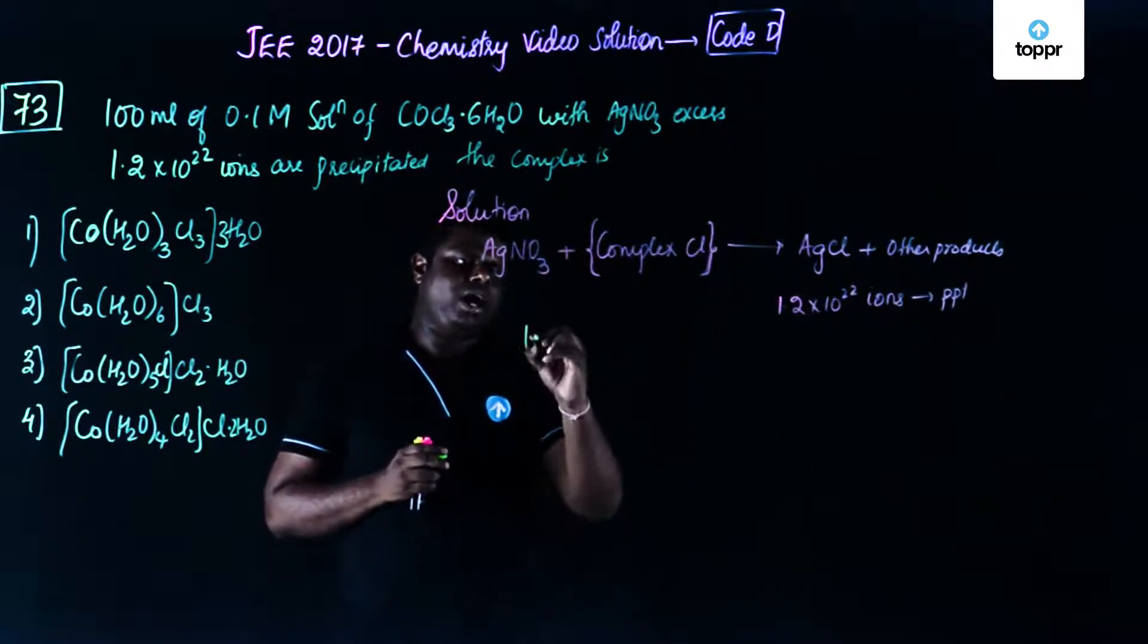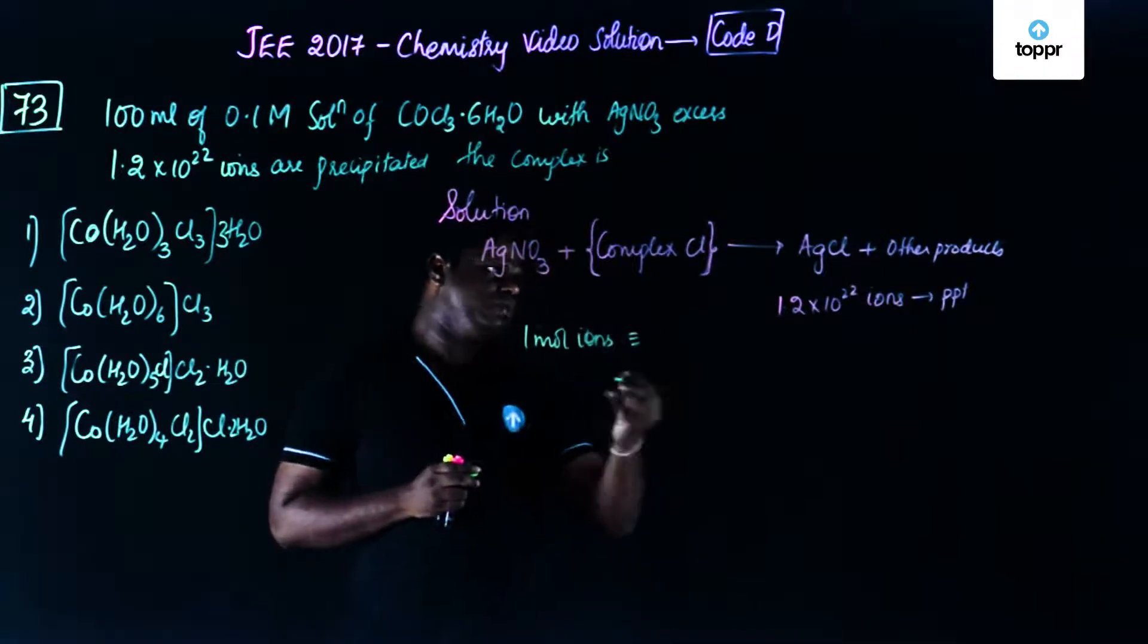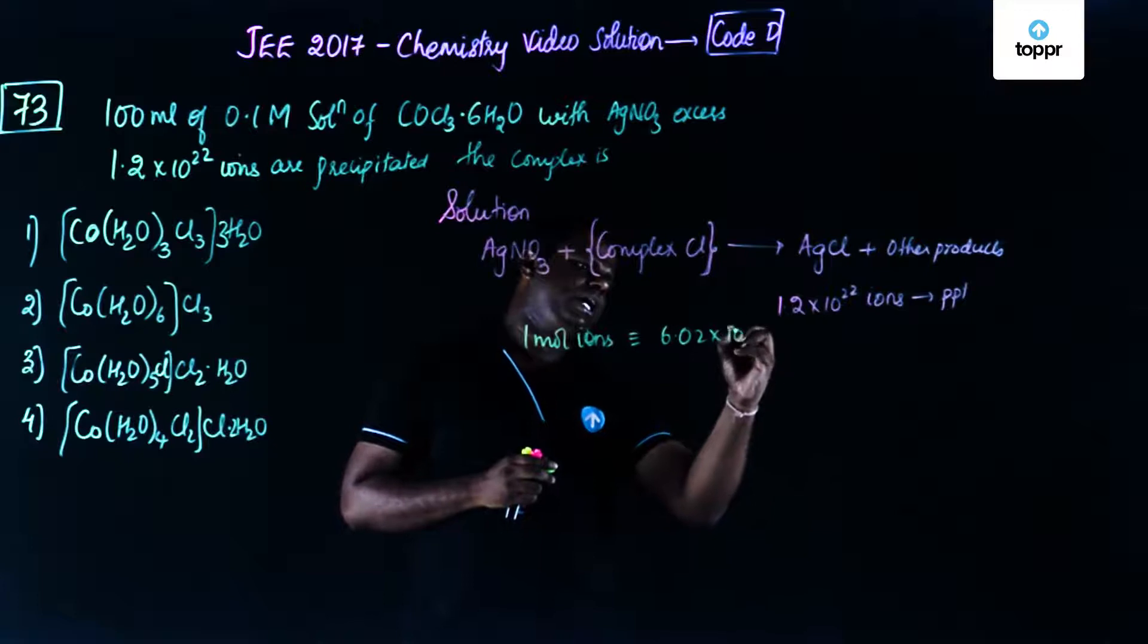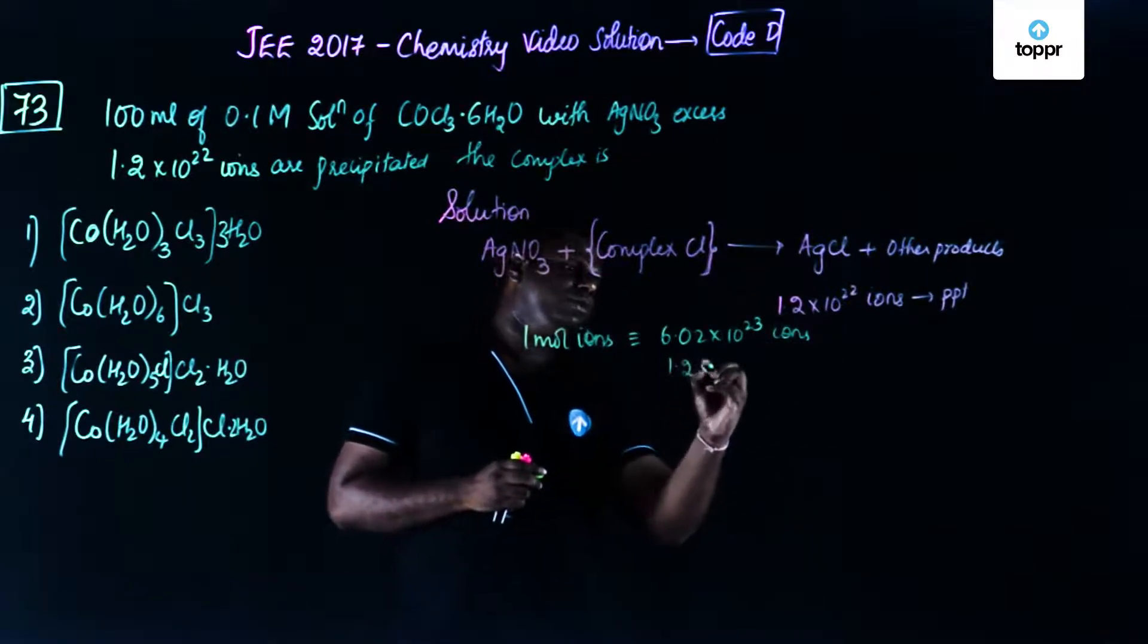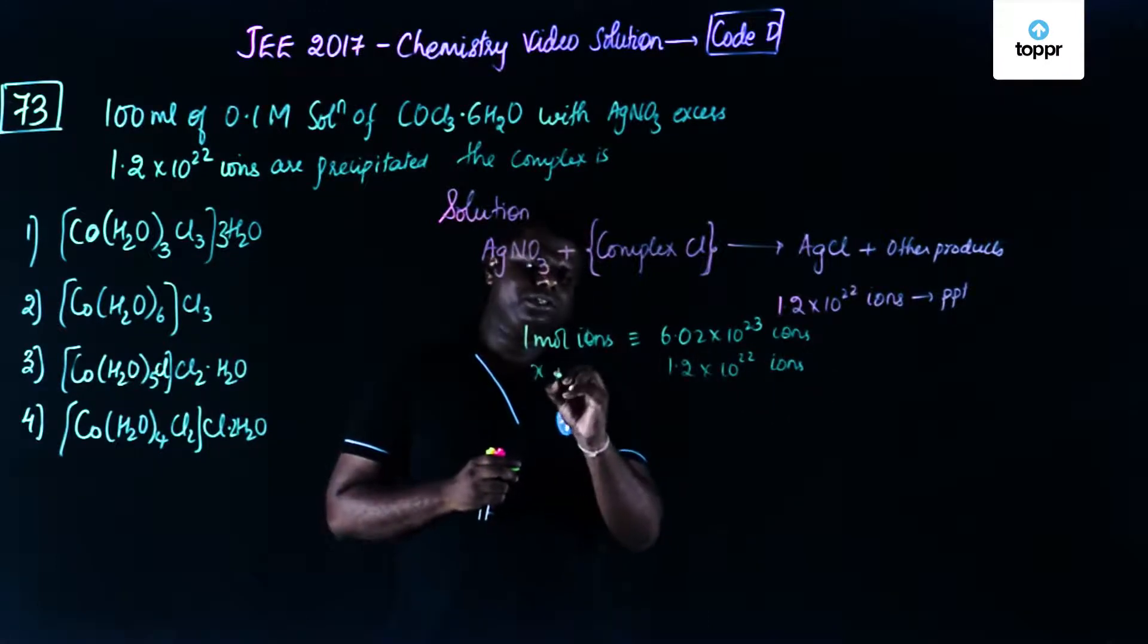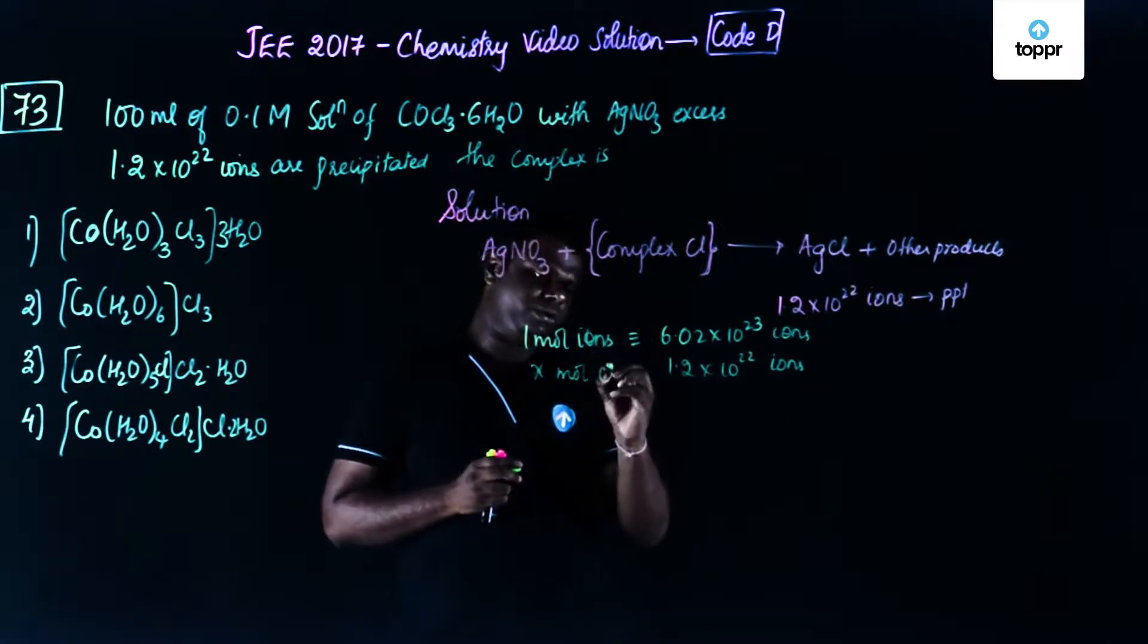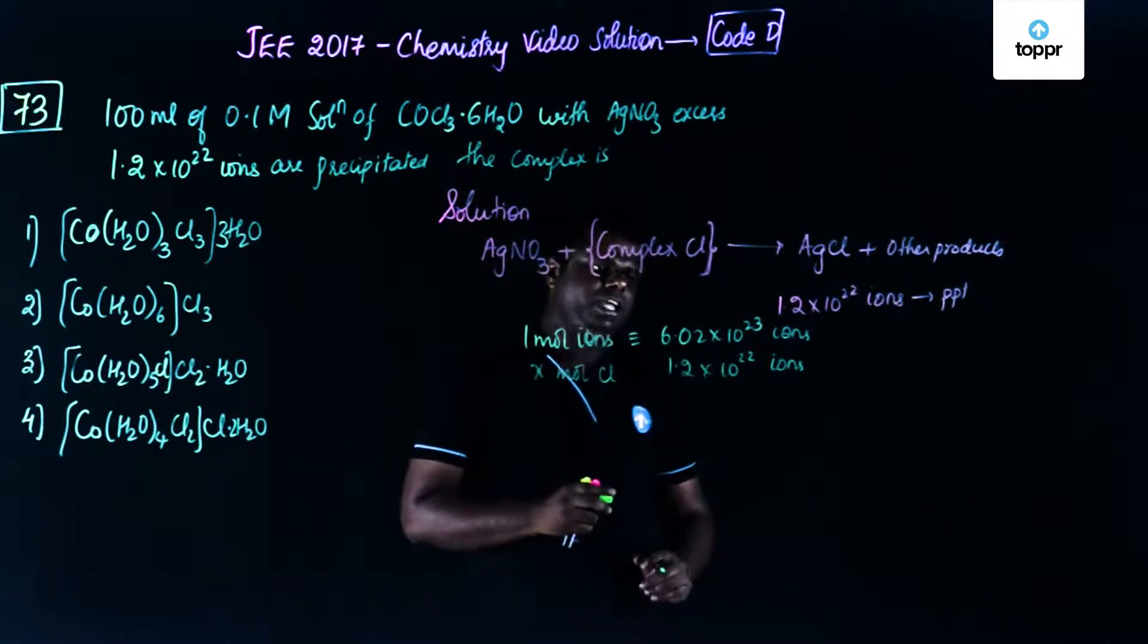So you have 1 mole ions corresponds to 6.02 into 10 to the power 23 ions. So that means 1.2 into 10 to the power 22 ions would correspond to x moles. x moles of Cl you could say because you already know what is the ion basically. So what exactly would be happening over here?